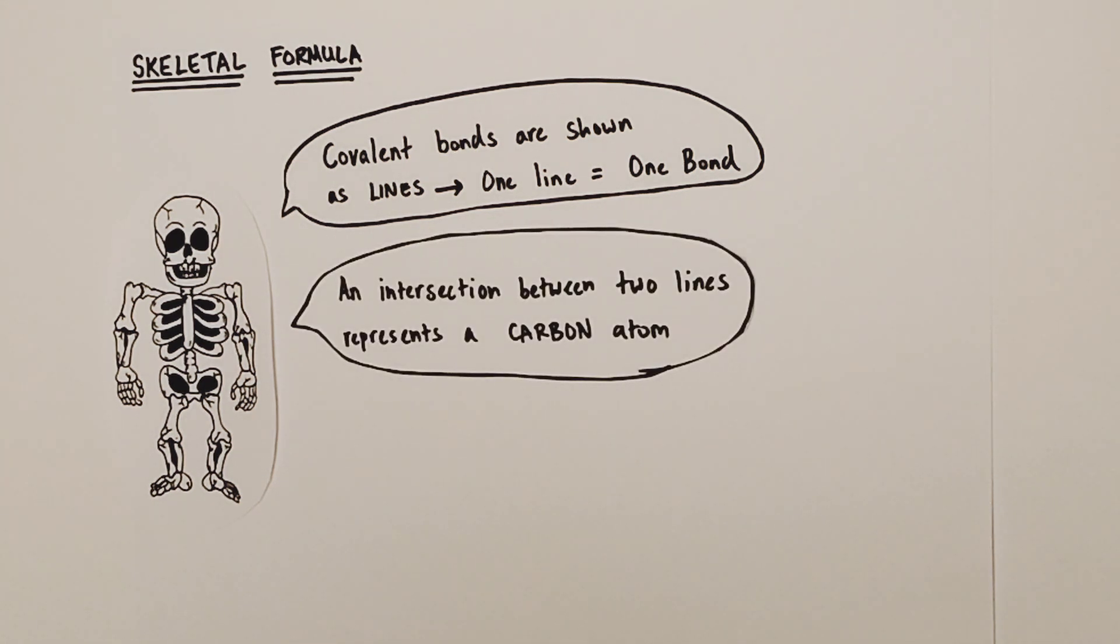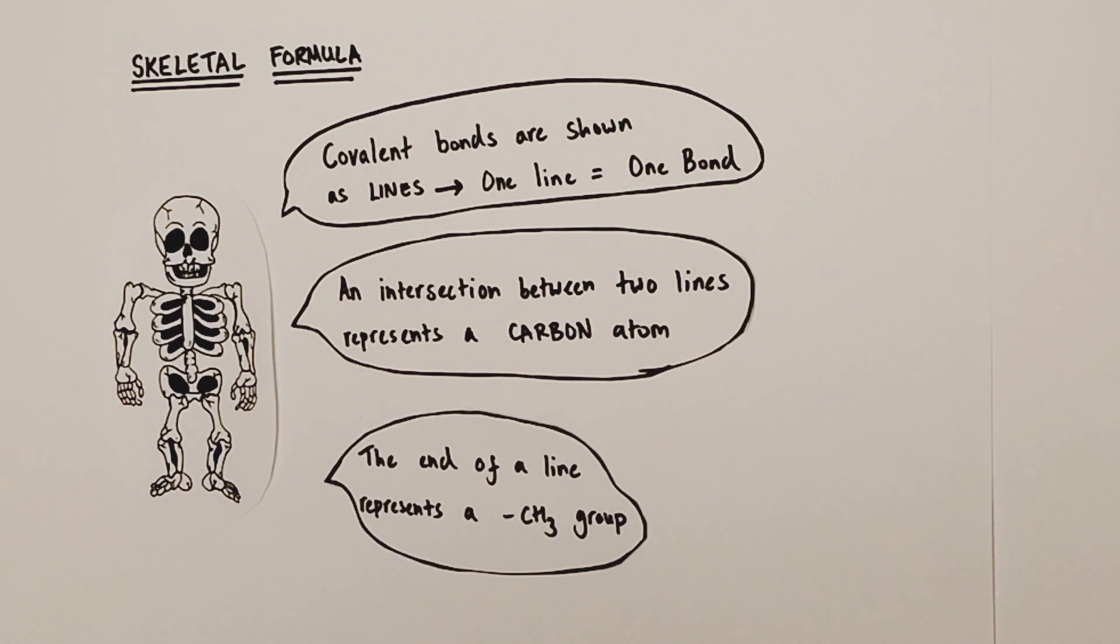An intersection between two lines, where two lines meet, represents the position of a carbon atom. The end of a line represents the end of a molecule, usually ending in a CH3 or a methyl group.